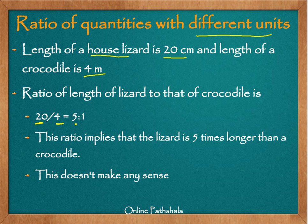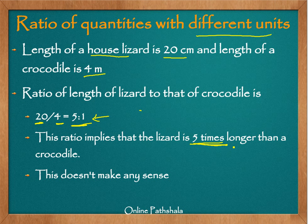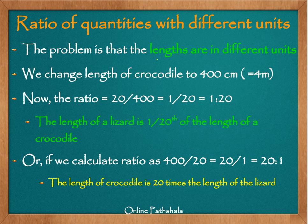When we simplify this fraction we get 5 by 1, or 5 is to 1. This would mean that the length of the lizard is 5 times that of the crocodile — or the lizard is 5 times longer than the crocodile. Now there is definitely something absurd about this, because we know the house lizard is very small and the crocodile is long. The problem is that the lengths are in different units, which is why we ended up with something incorrect.